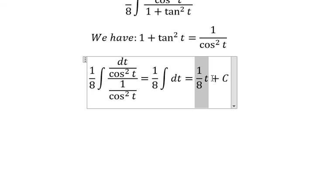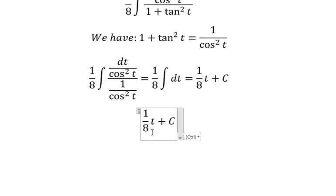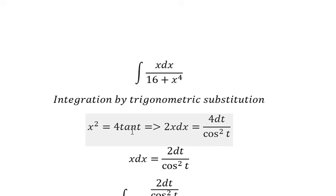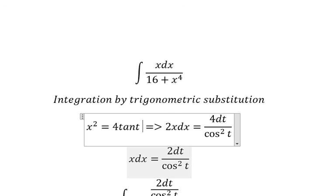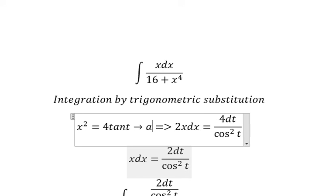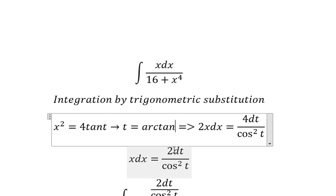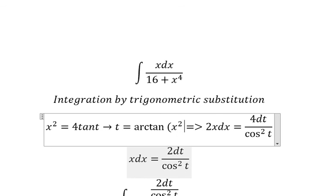Now we need to change back to x, and we have t equal to arctan of x^2 over 4.